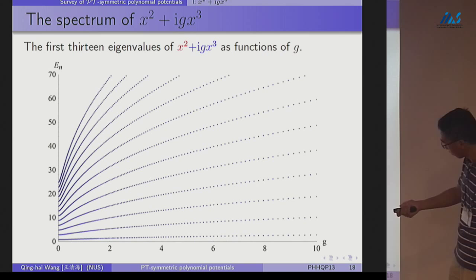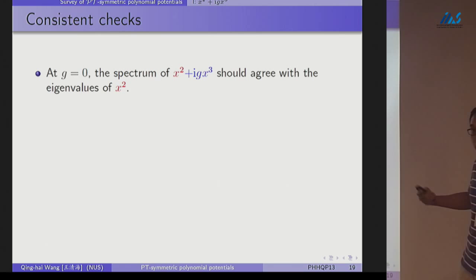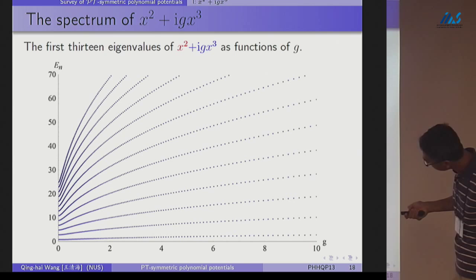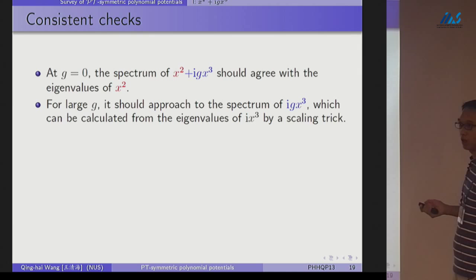And this is the spectrum, eigenenergy and g from zero to ten. We calculate nearly ten eigenvalues. And whether this is right, whether my numerical method is correct, we need to do a consistency check. One is when g equal to zero, I should recover harmonic oscillator. That means over here, I should have harmonic oscillator. And when g is large, I should have ig x to the cube.